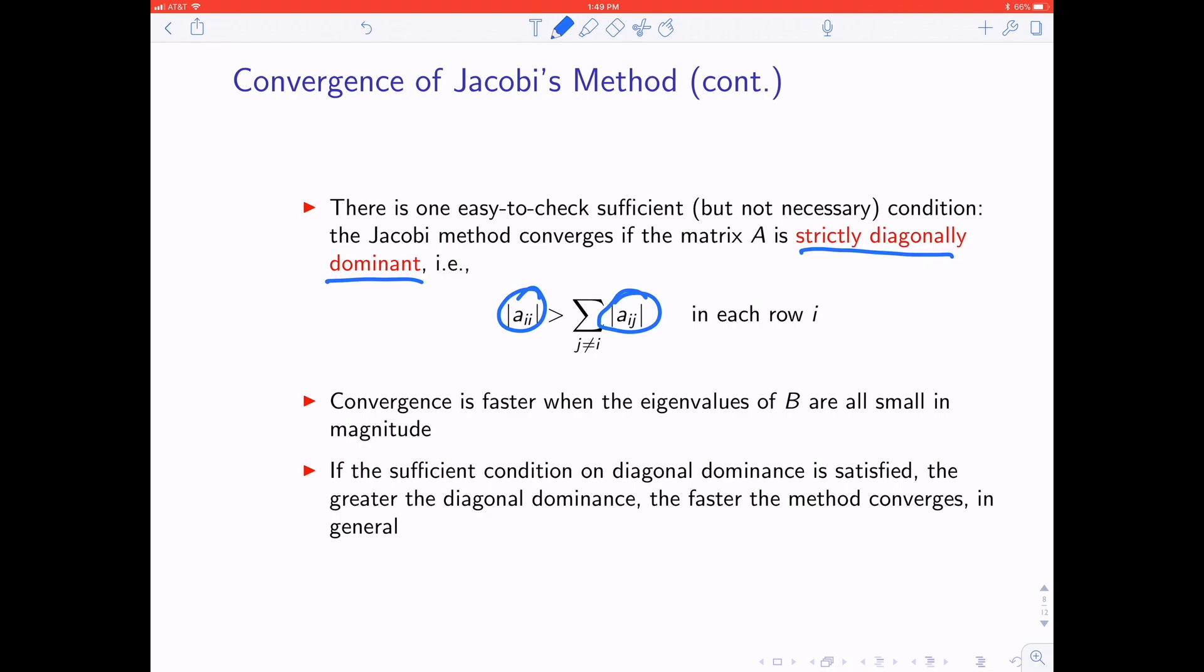Based on the calculation on the previous slide, when the eigenvalues of B are even smaller, much smaller than 1, convergence is even faster. The closer the eigenvalues are to 0, the faster convergence will be. Also, for this sufficient condition about strict diagonal dominance, the greater the diagonal dominance, in other words the more this is large than this thing, then the faster the method will converge.